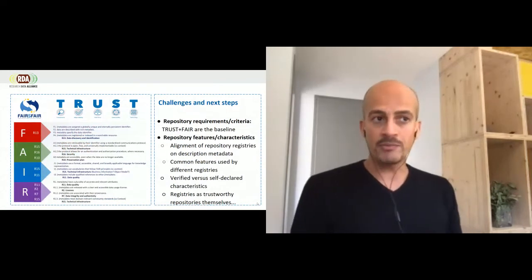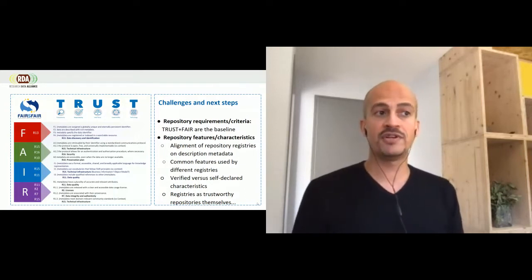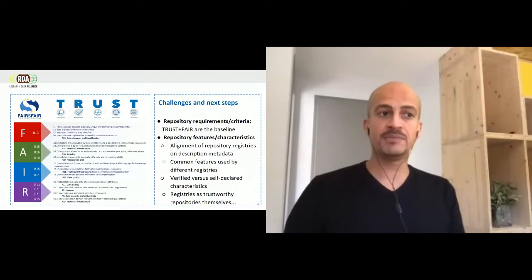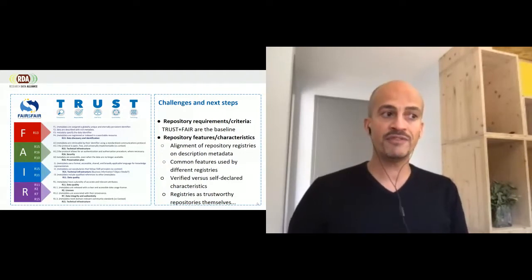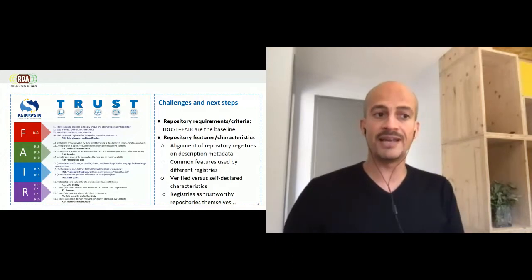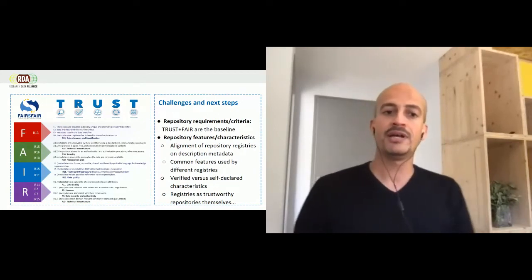I would like to highlight that the Core Requirements are implicitly aligned with and complementary to the FAIR principles, as you can see in the mapping on the left of this slide. In addition, as FAIR digital objects and FAIR-enabling repositories assessments are being developed, CoreTrustSeal requirements will integrate these core best practices. Finally, on the challenges and next steps, I would like to insist on the difference between repository good practice requirements and criteria on the one hand, and repository features and characteristics, which can be exposed by repository registries in a neutral way, on the other hand. For repository requirements, the consensus is that enabling trustworthiness and FAIR data are the baseline.